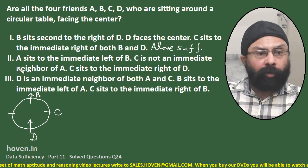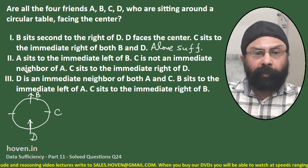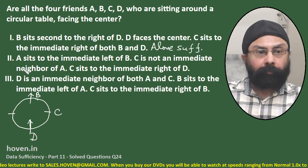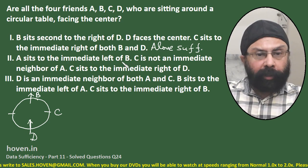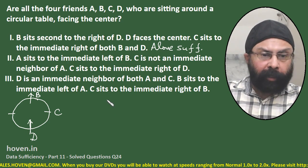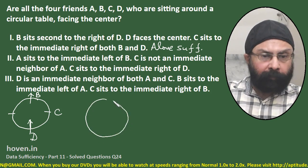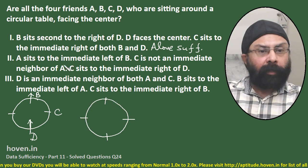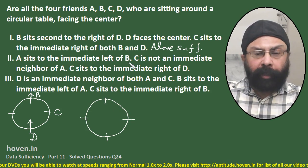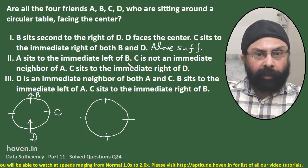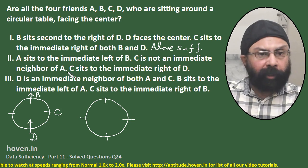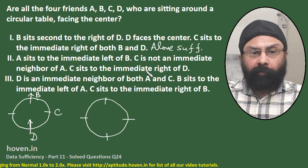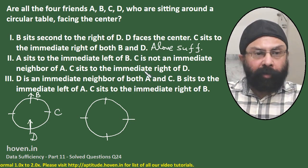Statement 1 was fairly easy. Let us now take the second statement and see whether it is also alone sufficient. Statement 2: A sits to the immediate left of B, and C is not an immediate neighbor of A. A fresh diagram has to be drawn with four positions.